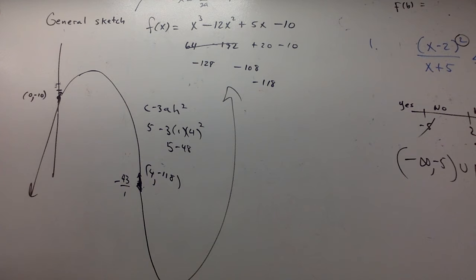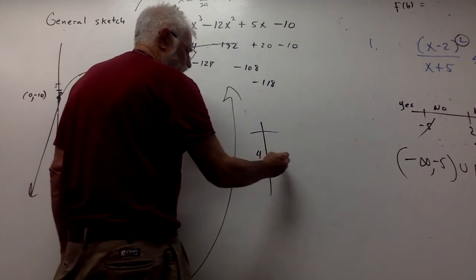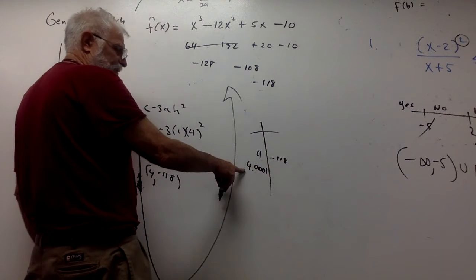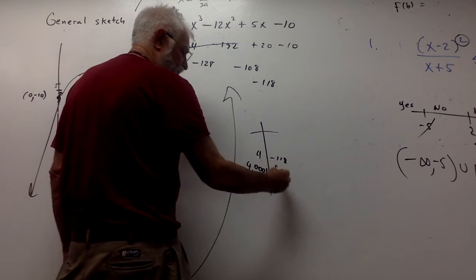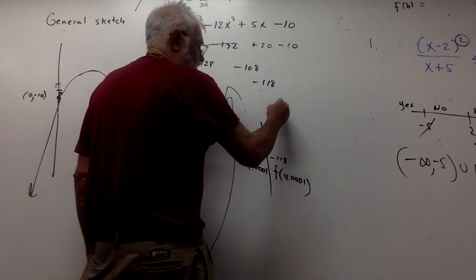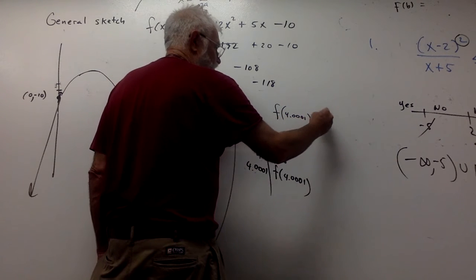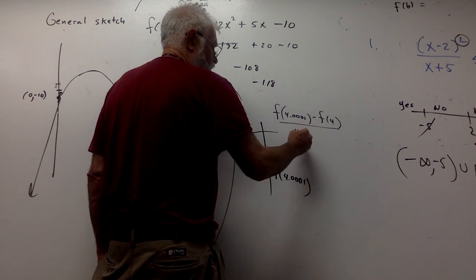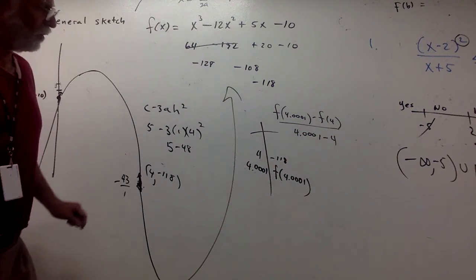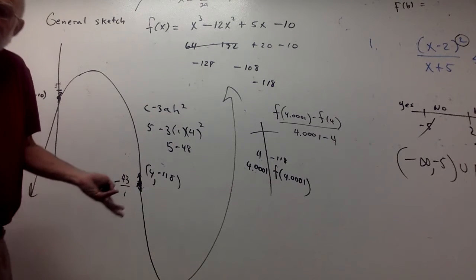And if you wanted to prove that to yourself, you could go to a table. You could put 4 in, get minus 118. You could put 4.01—that's where I start my calculus classes. You're going to get f of 4.01. And you can do f of 4.01 minus f of 4 over 4.01 minus 4.